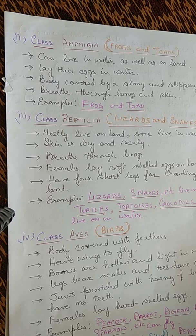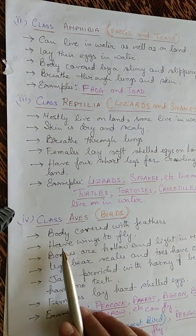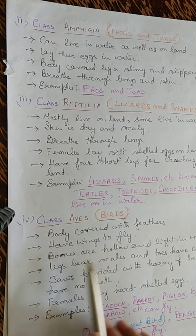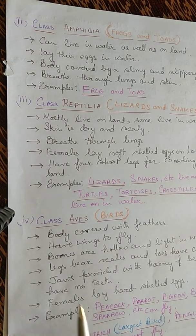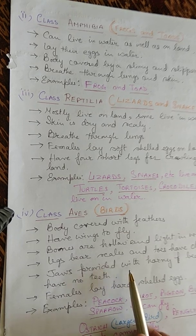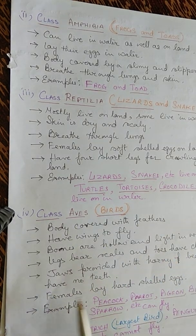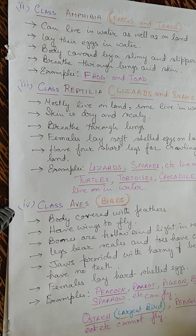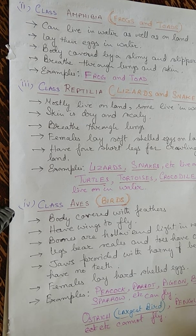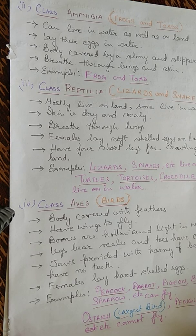The fourth class is Aves, or birds. Their body is covered with feathers; they have wings to fly. Their bones are hollow and light in weight, enabling flight. The legs bear scales, toes, and claws. Their jaws have a horny beak but no teeth. Females lay hard-shelled eggs. Examples: peacock, parrot, pigeon, bulbul, sparrow. Some birds like ostrich, penguin, and kiwi cannot fly.